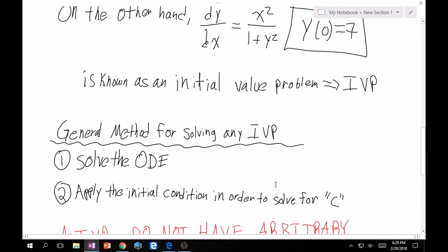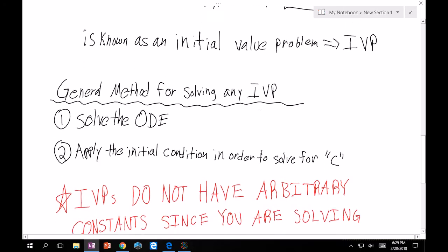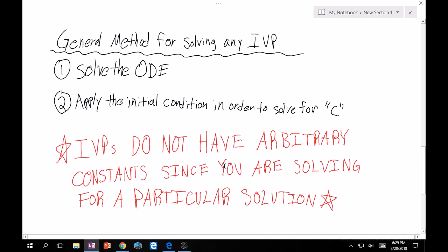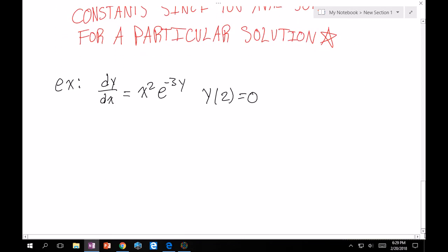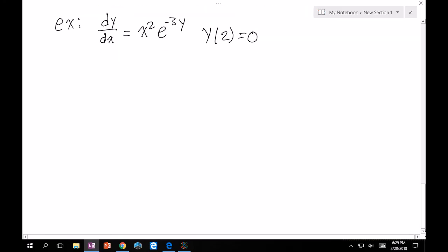The general method for solving any IVP is to first solve the ODE, so don't worry about the initial condition for now. Just try to find the general solution and the set of solutions that solve the ODE, and then apply the initial condition in order to solve for that arbitrary constant c. And then, one last time, IVPs do not have arbitrary constants because you are solving for a particular solution. If I give you an IVP, I don't expect that there's going to be a c in your final answer.